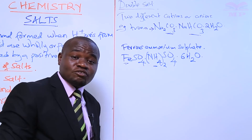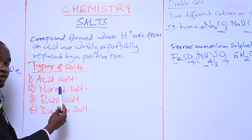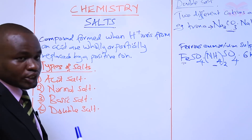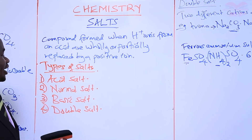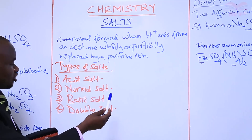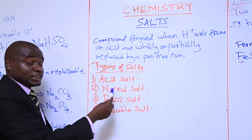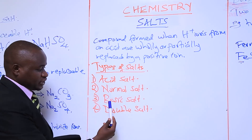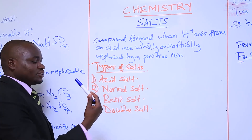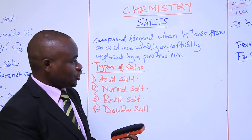We have four types of salts: acid salt, normal salt, basic salt, and double salt. An acid salt is identified by the presence of hydrogen ions. A normal salt does not contain a replaceable hydrogen ion. A basic salt is identified by the presence of hydroxide ions. A double salt contains two different cations or anions. Now try these questions: number one, define the meaning of the word salt; number two, giving examples, define the types of salt.